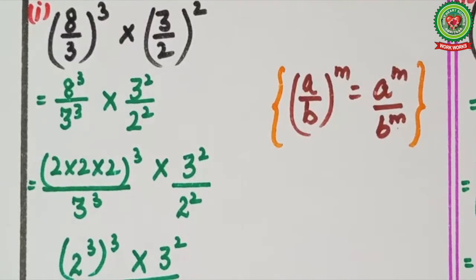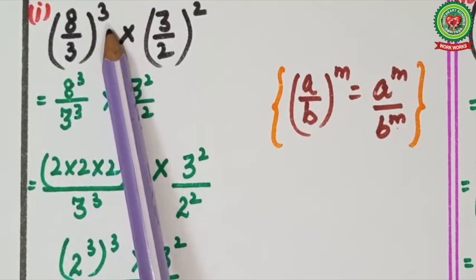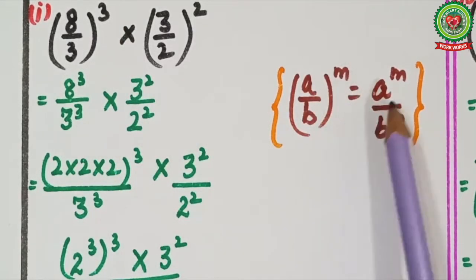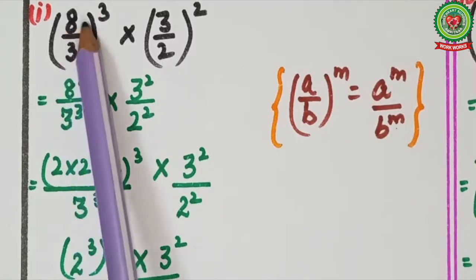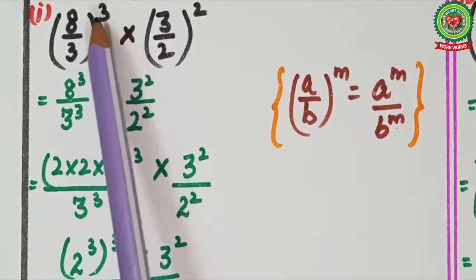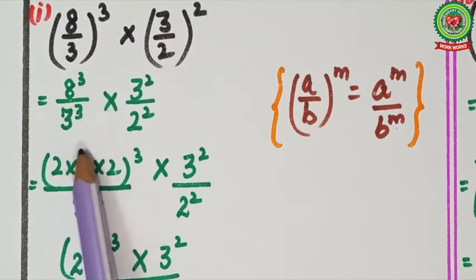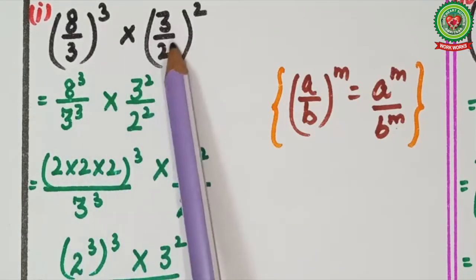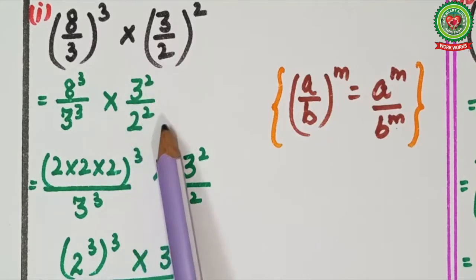First, we apply the rule: a upon b raised to power m equals a raised to power m upon b raised to power m. So 8 upon 3 raised to power 3 means 3 is the power of both 8 and 3. We write 8 raised to power 3 upon 3 raised to power 3, multiplied by 3 raised to power 2 upon 2 raised to power 2.